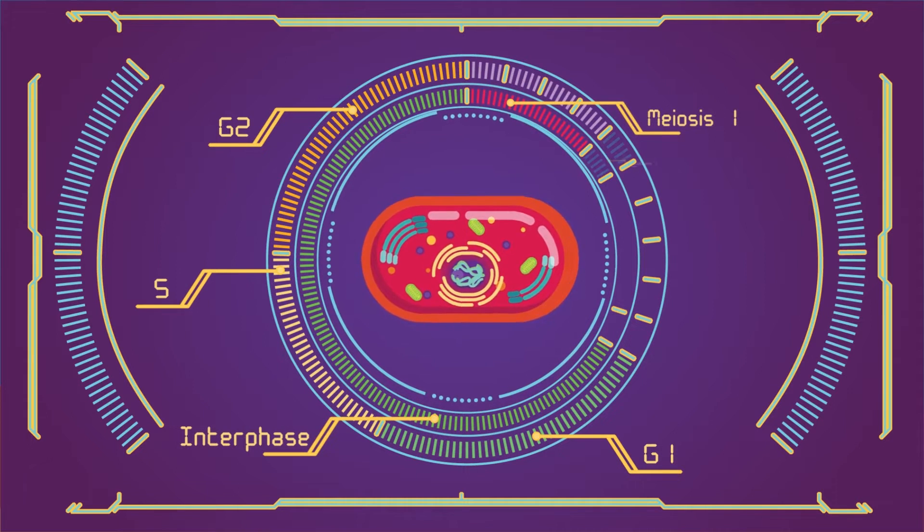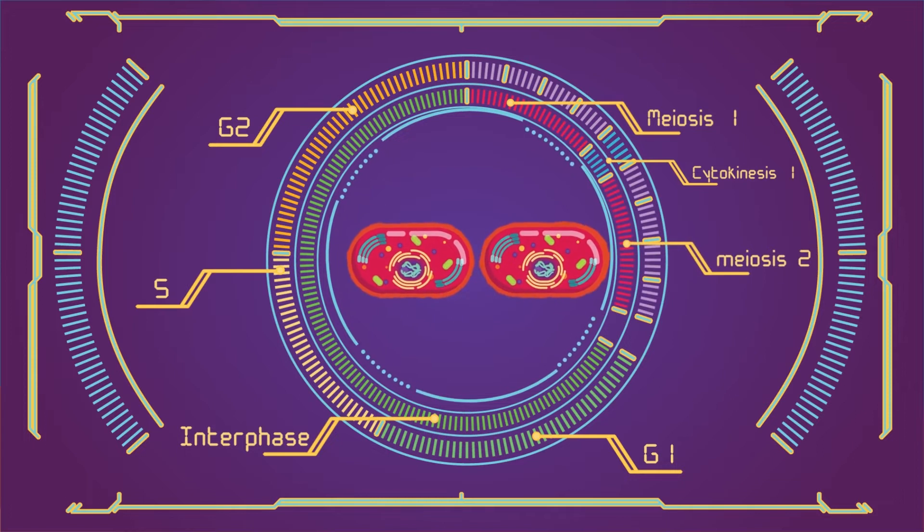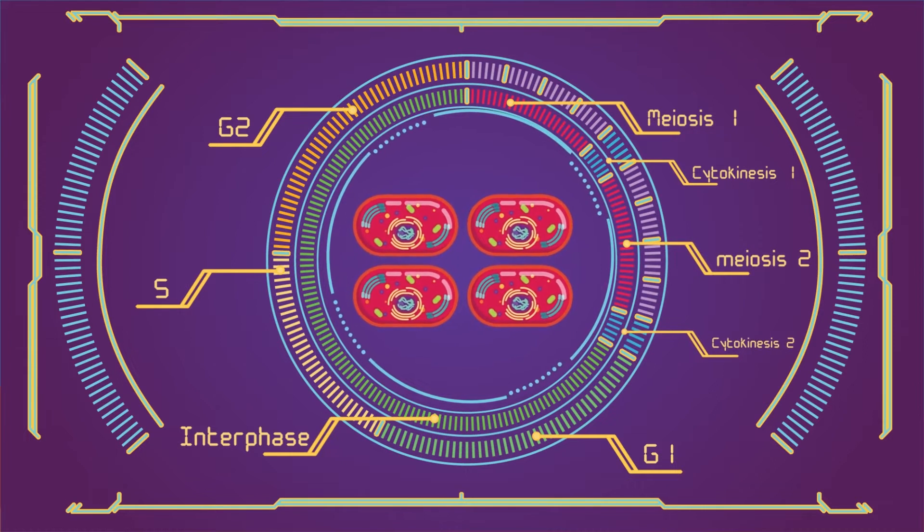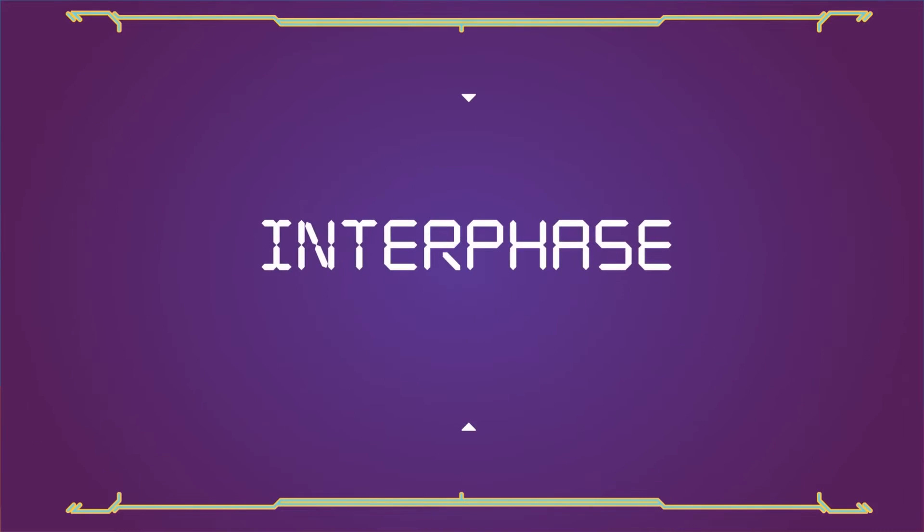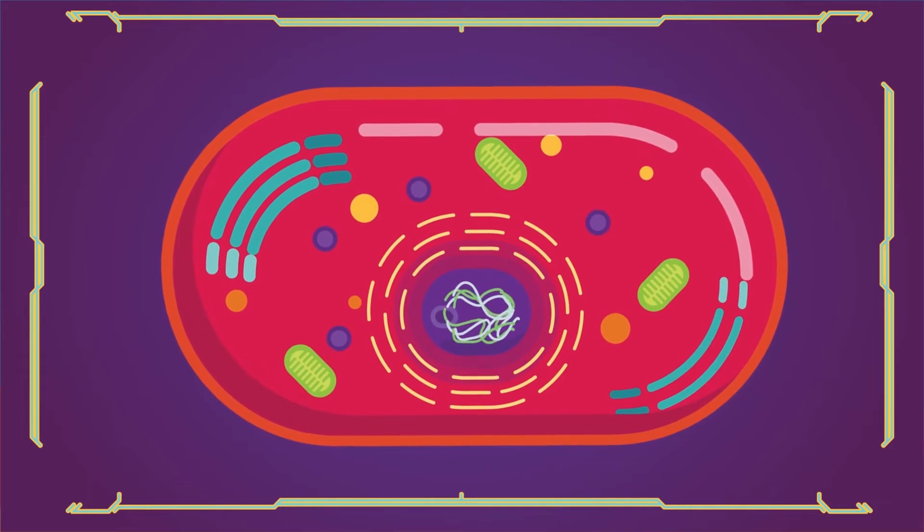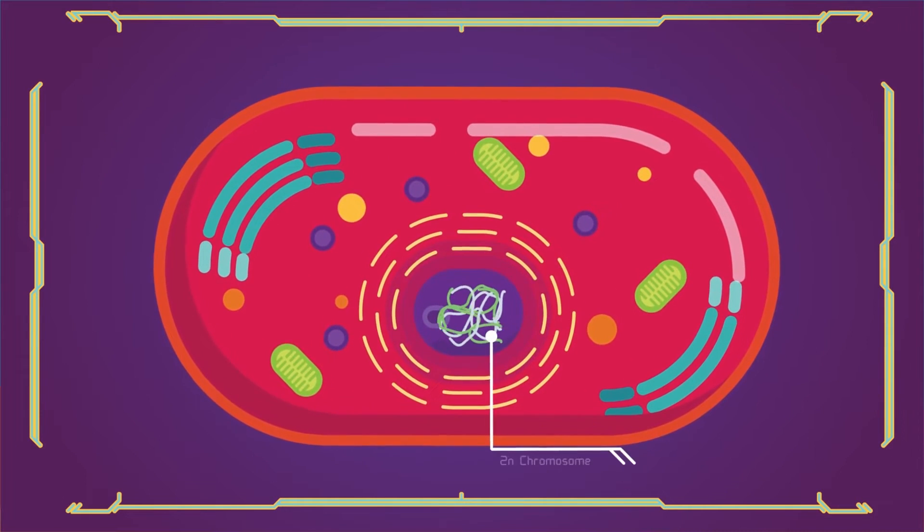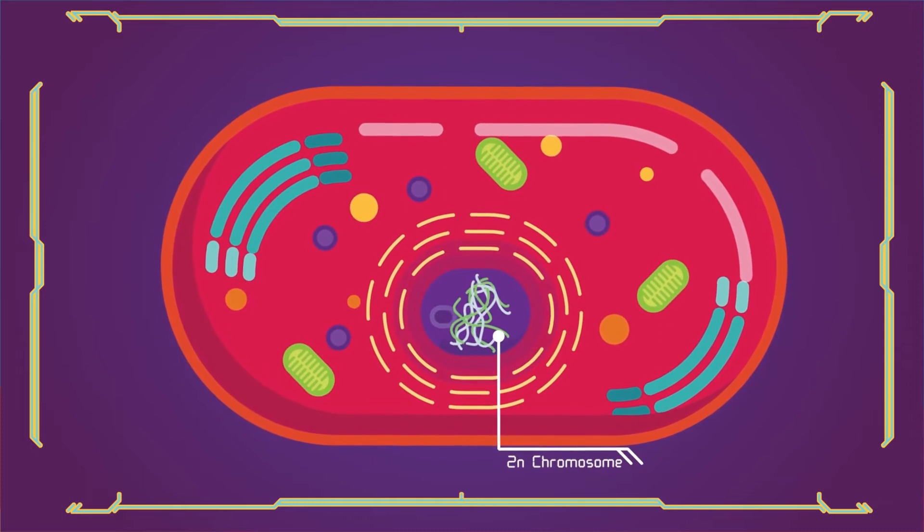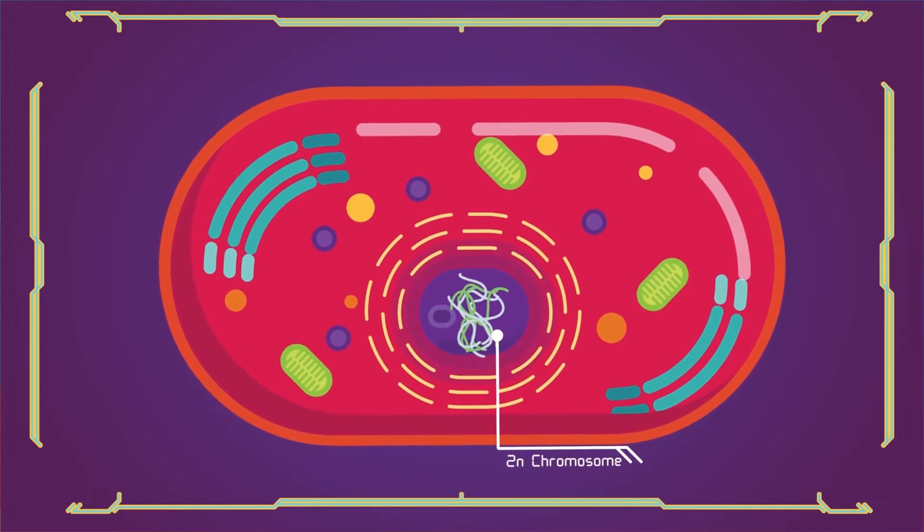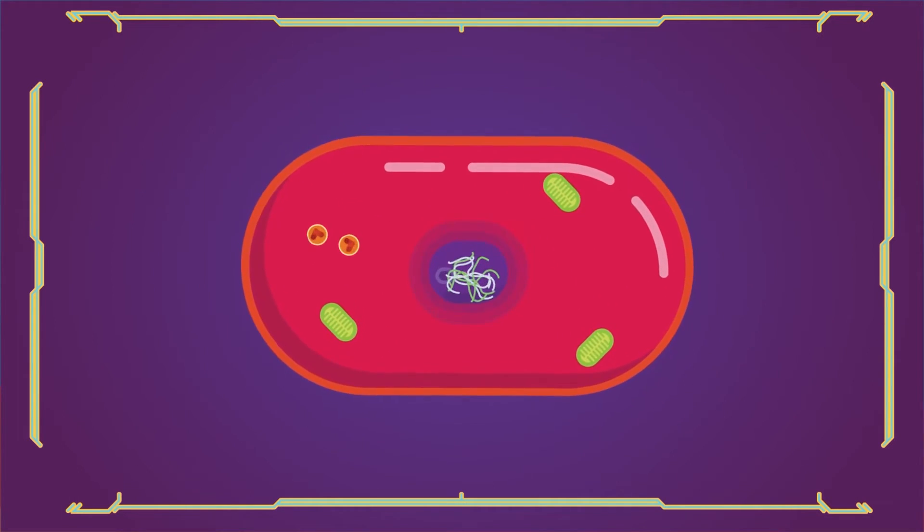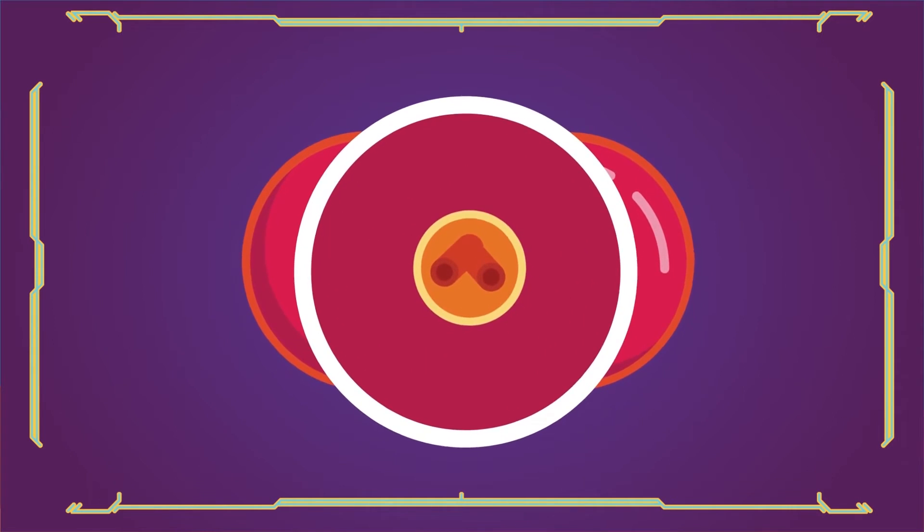First at interphase: in interphase, DNA is copied resulting in two identical full sets of chromosomes to prepare for division. Outside of the nucleus are two centrosomes, each containing a pair of centrioles. These structures are critical for the process of cell division.